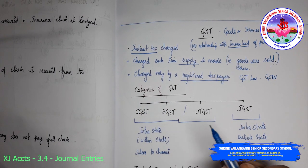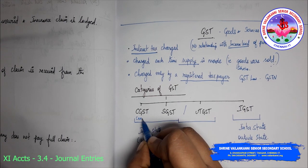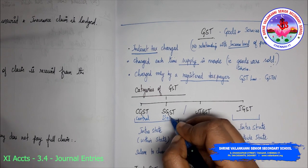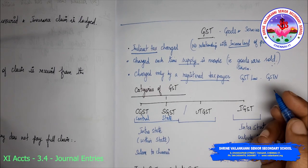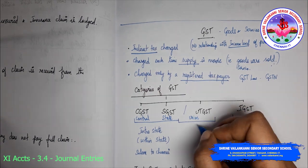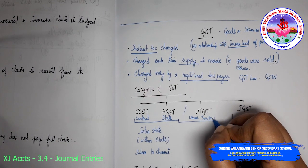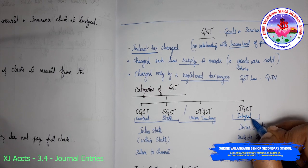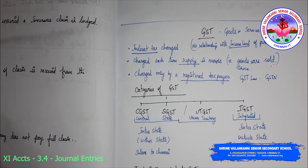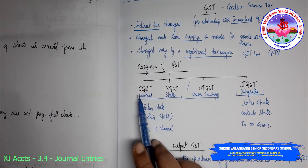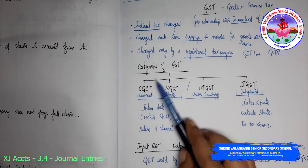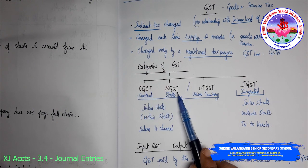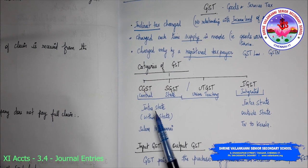The categories of GST are: CGST — Central Goods and Services Tax; SGST — State Goods and Services Tax; UTGST — Union Territory Goods and Services Tax; and IGST — Integrated Goods and Services Tax. CGST and SGST are attracted when there is an intrastate supply.